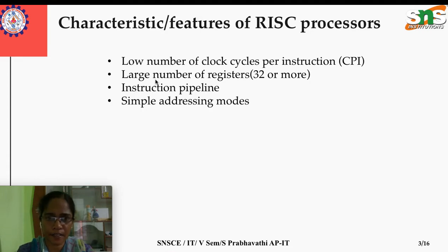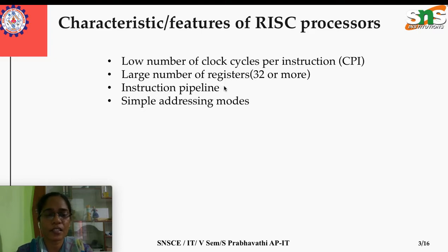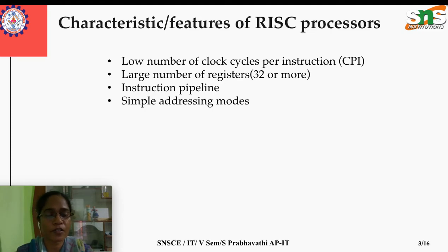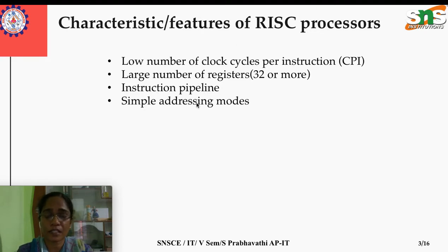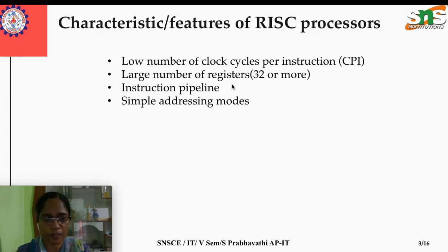RISC architecture has more registers, ranging from 32 and more. Instruction pipelining is a big feature of RISC. Pipelining increases the performance of the computer system by overlapping one instruction with another. Since RISC instructions are quite simple, there is a higher possibility of overlapping, making pipelining the main feature of RISC to improve execution performance.